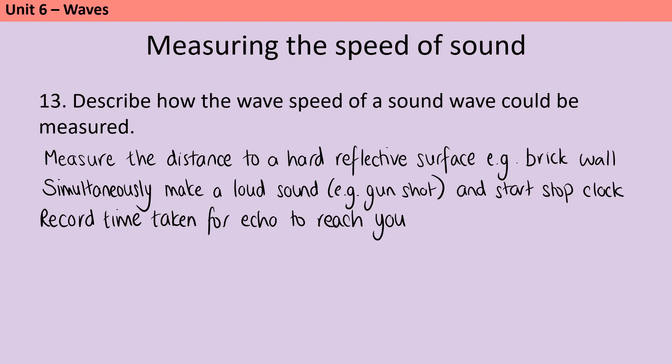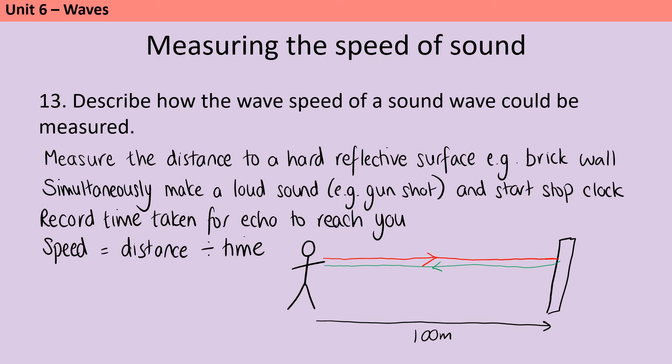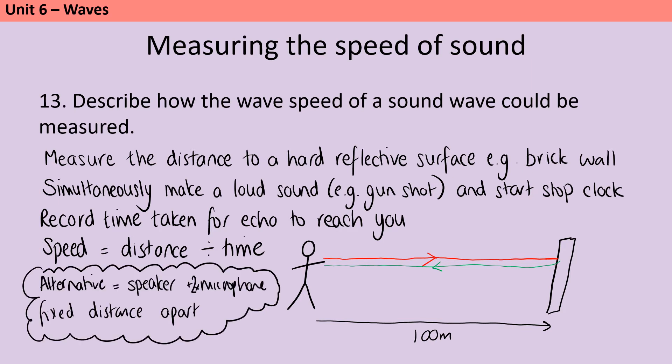Then you can use the equation speed is distance divided by time to work out the speed of the sound wave, but remember that when you do this you're going to need to use double the distance from you to the brick wall. So the reason for that is that the sound wave is going to move away from you, hit the wall, and then be reflected back, so it's actually covering double the distance. The alternative way you could do this is using a pair of linked microphones and a speaker. So you can have a setup where the speaker makes a noise and one of the microphones is right next to it, so that goes into your computer, and then the other microphone is much further away, and you measure how long does it take for the sound to get to that microphone, and then you can do the same thing.